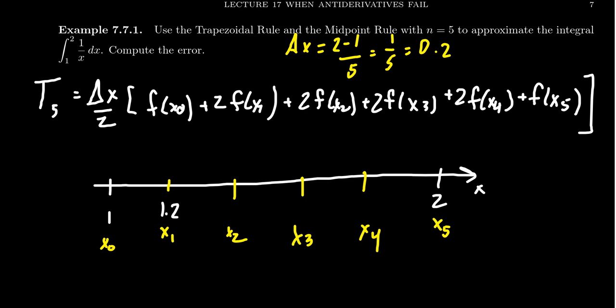And so what this tells us is that x1 will just be 0.2 plus 1, so 1.2, we get 1.4, 1.6, 1.8 for x4 and then 2 for x5 there. So those are going to be our x values there.